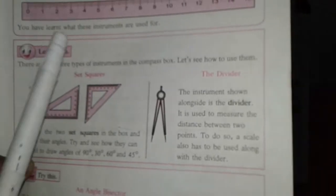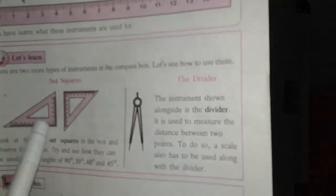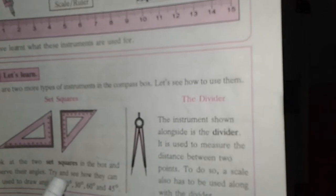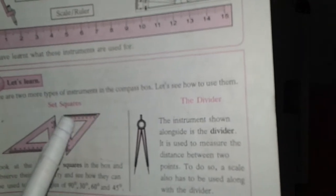Here are figures like triangles — two triangles. These are called set squares. Set squares are used to draw perpendiculars. In the first set square, you can draw angles of 90 degrees, 30 degrees, and 60 degrees. In the second set square, you can draw angles of 45 degrees and 90 degrees. And this is a divider. It is used to measure the distance between two points.